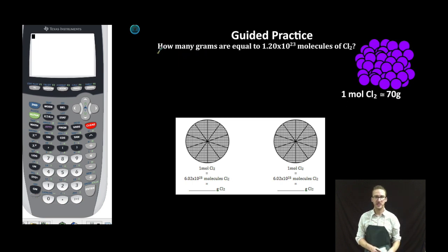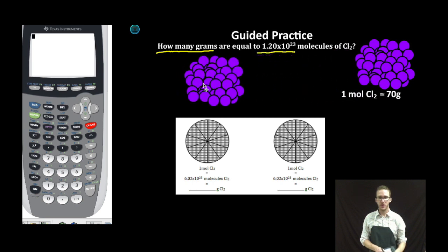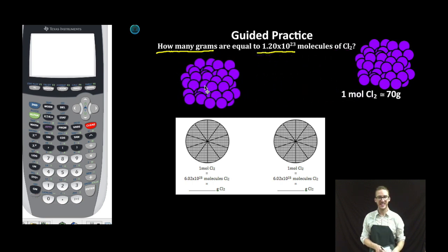Now in this problem, we're asked to determine how many grams are equal to 1.2 times 10 to the 23 molecules of Cl2. Now remember, this one mole of chlorine is 70 grams and contains 6.02 times 10 to the 23 molecules of chlorine. And since I only have 1.2 times 10 to the 23 molecules of chlorine, I know that I have less than one mole.